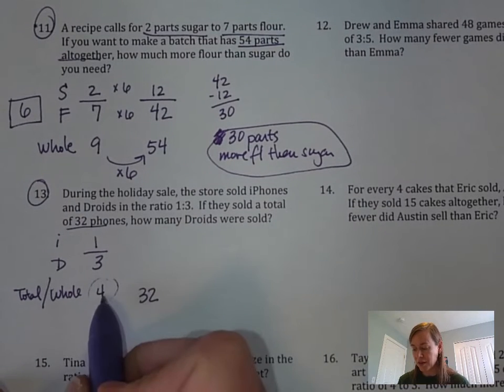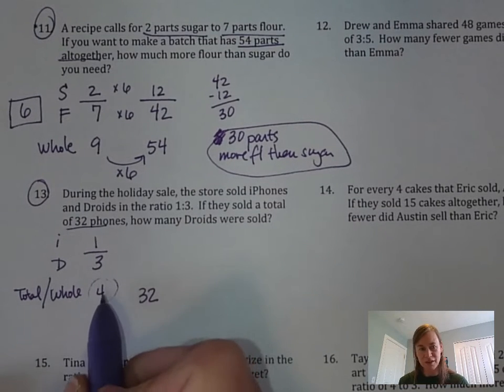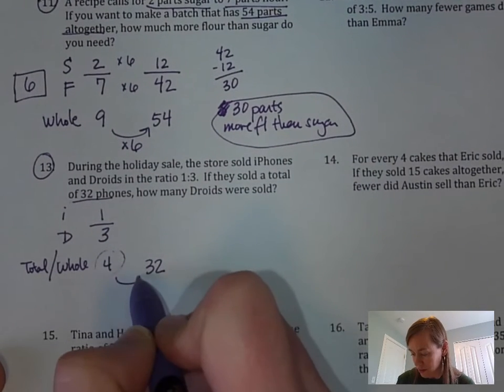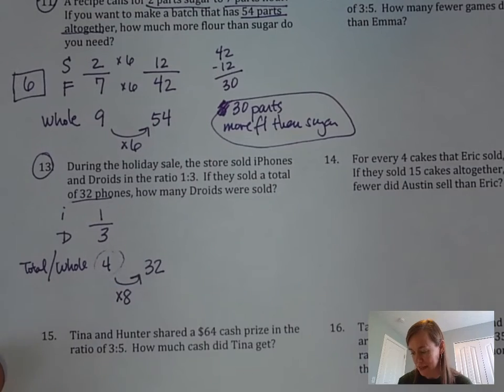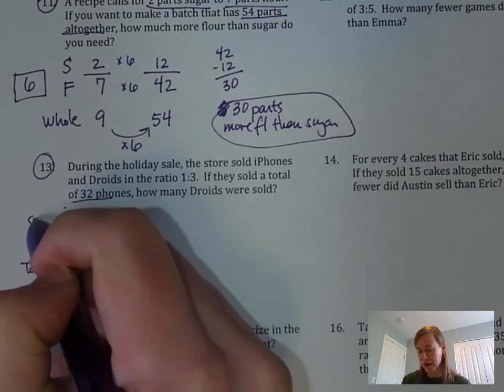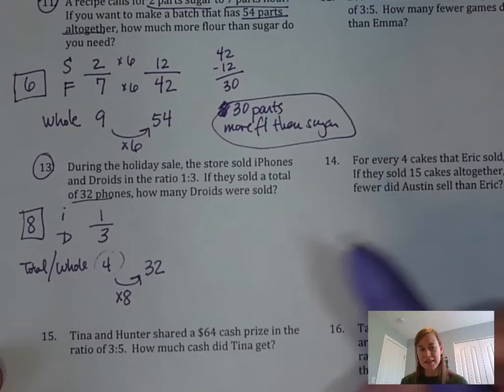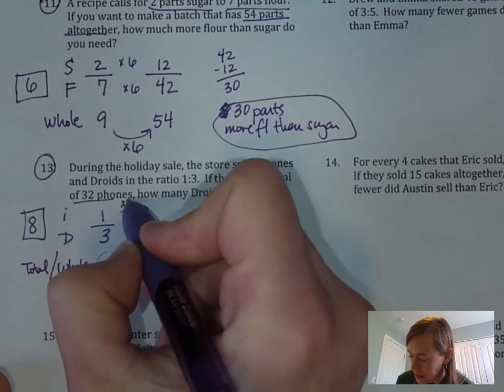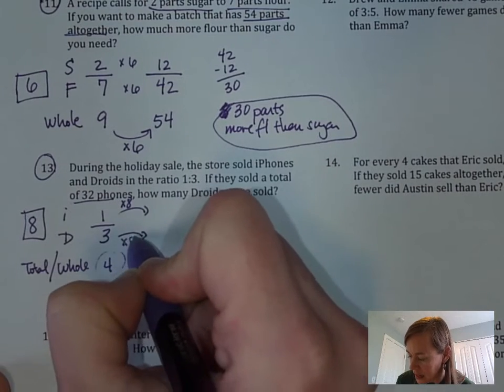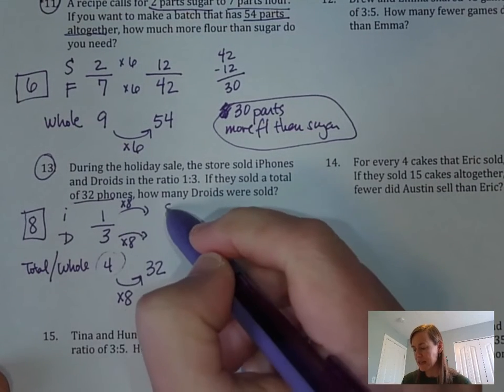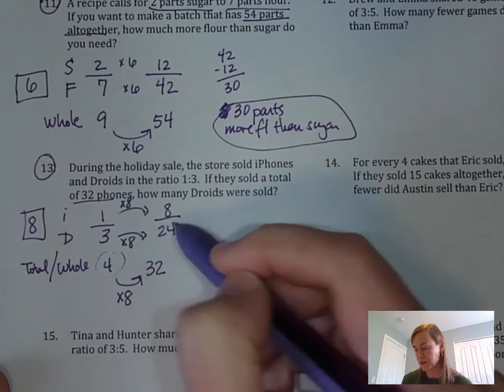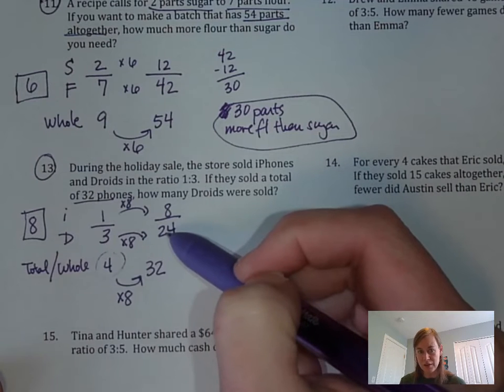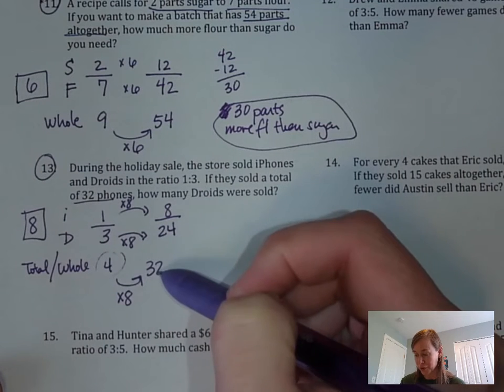How do you use multiplication or division to make a 4 turn into a 32? You're going to multiply by 8, right. Times 8. Now you've got to take that scale factor and apply it to iPhones and Droids. So 1 times 8 and 3 times 8. 1 times 8 is 8, 3 times 8 is 24.